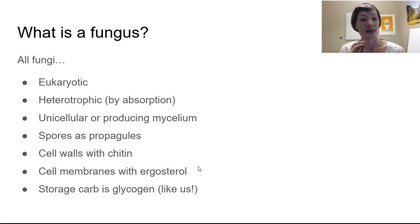So fungal cell walls have chitin in them. Plant cells will have a different component, and that's going to be cellulose. And we'll see that in most of the other groups. So this really distinguishes fungi from other groups studied in botany.